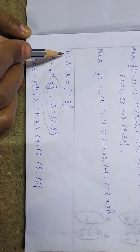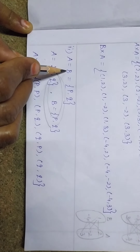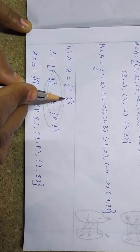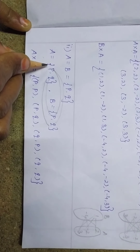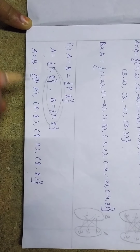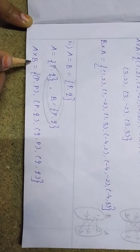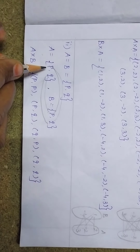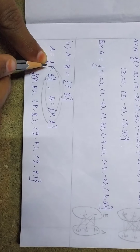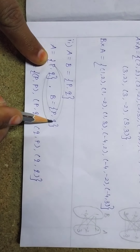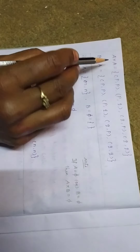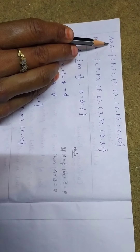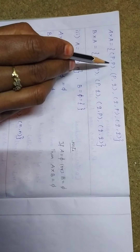Next we have to find the second sum. Here A equals B equals {P, Q}, that is the sets A and B are both the same. Now we have to find A cross B: the ordered pairs are (P,P), (P,Q), (Q,P), (Q,Q). Next, A cross A — since the domain and co-domain are both the same, we get the same answer.